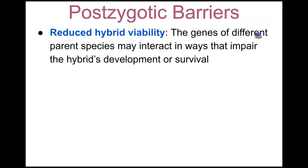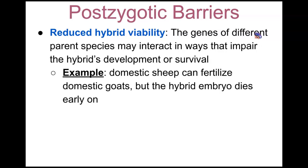Reduced hybrid viability is when the genes of different parent species interact in ways that impair the hybrid's development or survival. An example: domestic sheep can fertilize domestic goats, but the hybrid embryo will die early on.